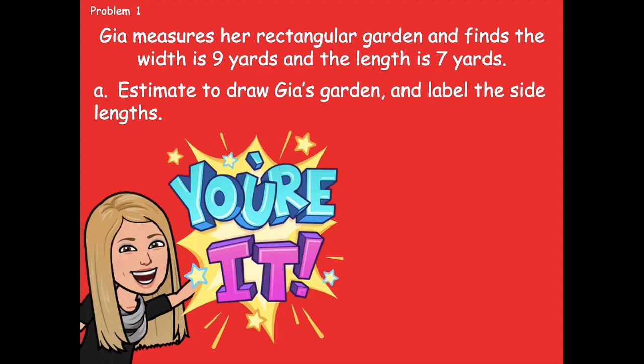Go ahead and pause the video, draw a picture of Gia's garden, label the side lengths, and then click play when you're ready to go over it together.